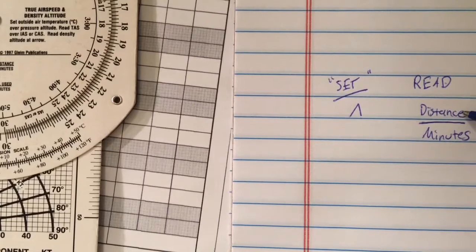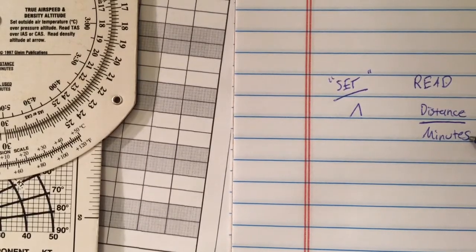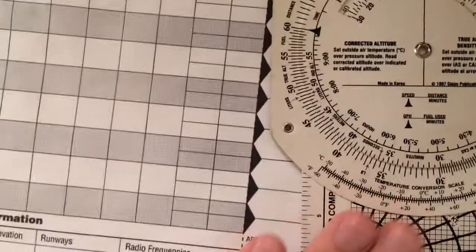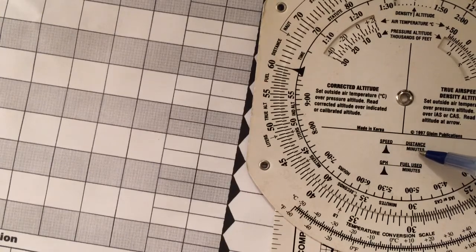So set whatever is under the arrow, and then read whatever it is over whatever the other thing is. So in this case, think of set speed, read distance over minutes.